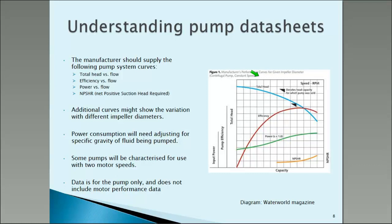At the bottom there we have a yellow line, the NPSH — net positive suction head. If you're going at very high flows and the pressure at the inlet starts to get low, you can get bubbles, which reduces the efficiency. When the bubbles burst, you get cavitation — that starts to erode the pump and the pump makes a horrible noise. So that's something physical you need to check when finally selecting the pump to use.